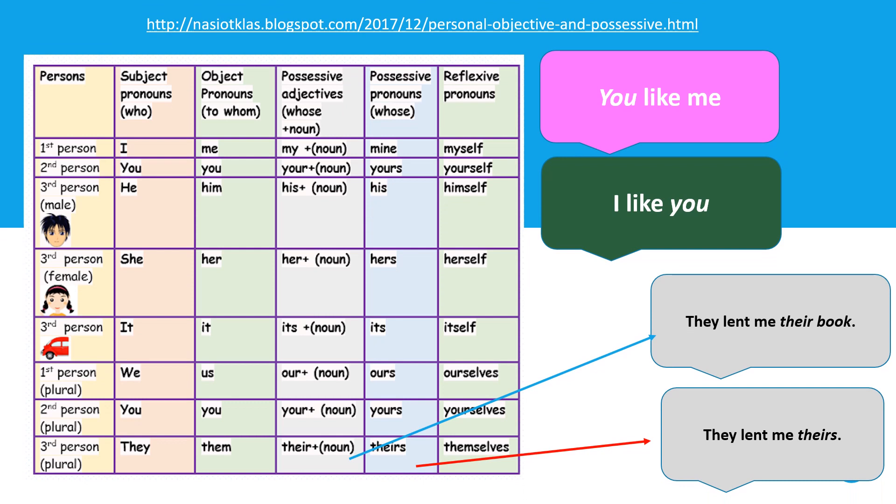Ini mengingatkan kalian kembali tentang subject, object, possessive adjective, possessive pronouns, dan reflexive pronouns — sudah dipelajari dari SMP, SMA. Kita lihat subject pronouns — dalam kurung 'who.' Maksudnya, kalau yang kalian ingin terangkan itu subject, seperti I, you, he, she, it, we, they, maka gunakanlah 'who.'